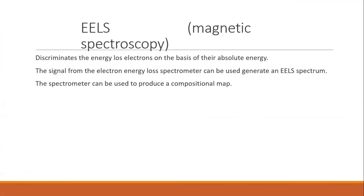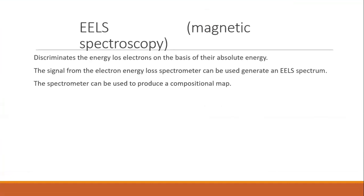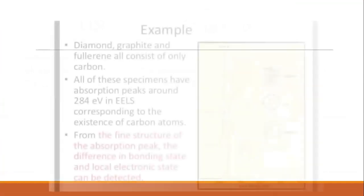The spectrometer discriminates the energy loss electrons on the basis of their absolute energy. The signal from the electron energy loss spectrometer can be used in an ELS spectrum. The spectrometer can be used to produce a compositional map.